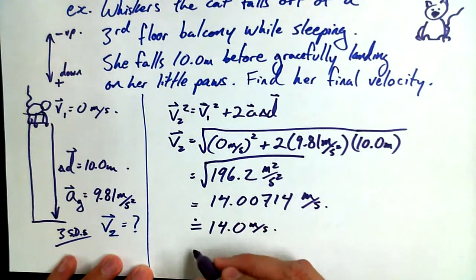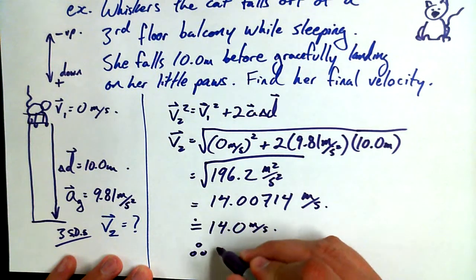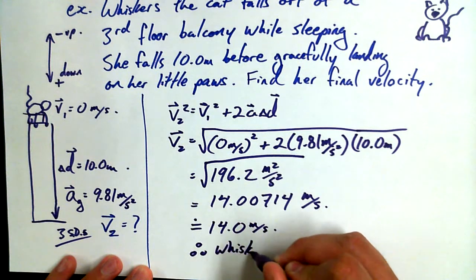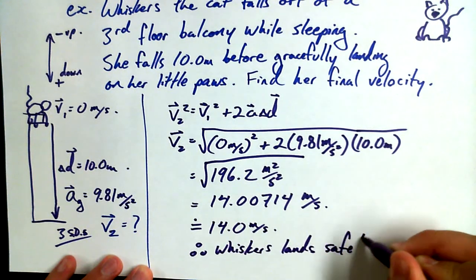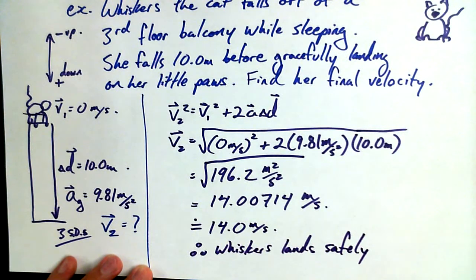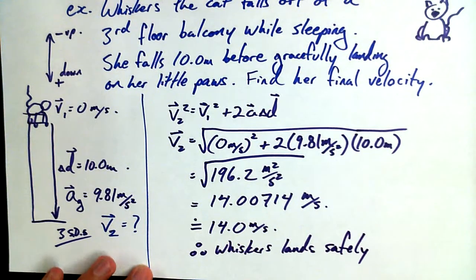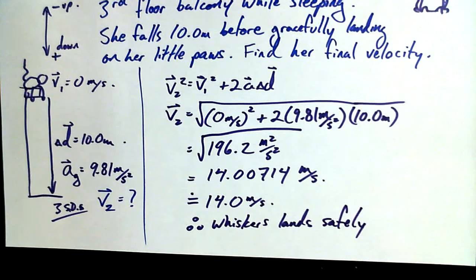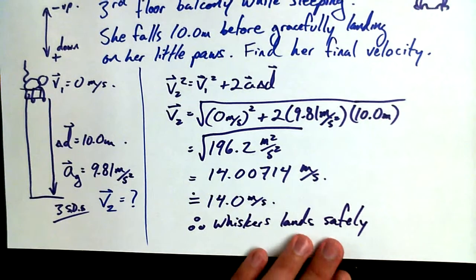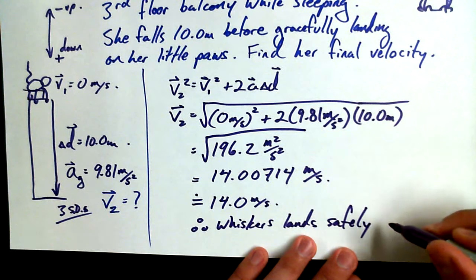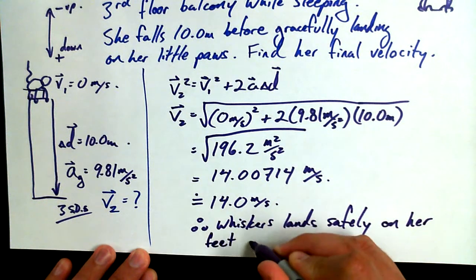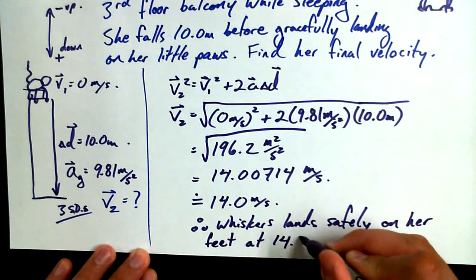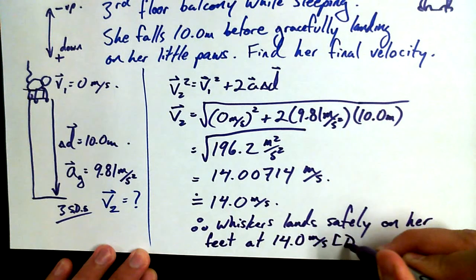And then we could say therefore, Whiskers lands safely. Not being too morbid here but is this really safe? No, 14 meters per second, that's like shooting a cat out of a rifle almost. 14 meters per second, that's a fast cat. Lands safely on her feet, but let's suspend our disbelief at 14.0 meters per second down.